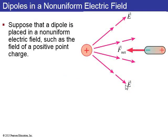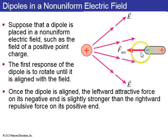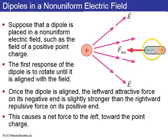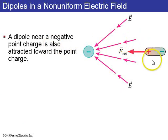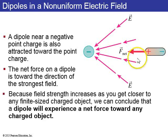In a non-uniform electric field — such as that from a point charge — a dipole first rotates to align with the field. Once aligned, the attractive force on the near end is greater than the repulsive force on the far end, producing a net force pulling the dipole toward the source charge. This applies whether the source is positive or negative: any charged object will attract nearby dipoles.